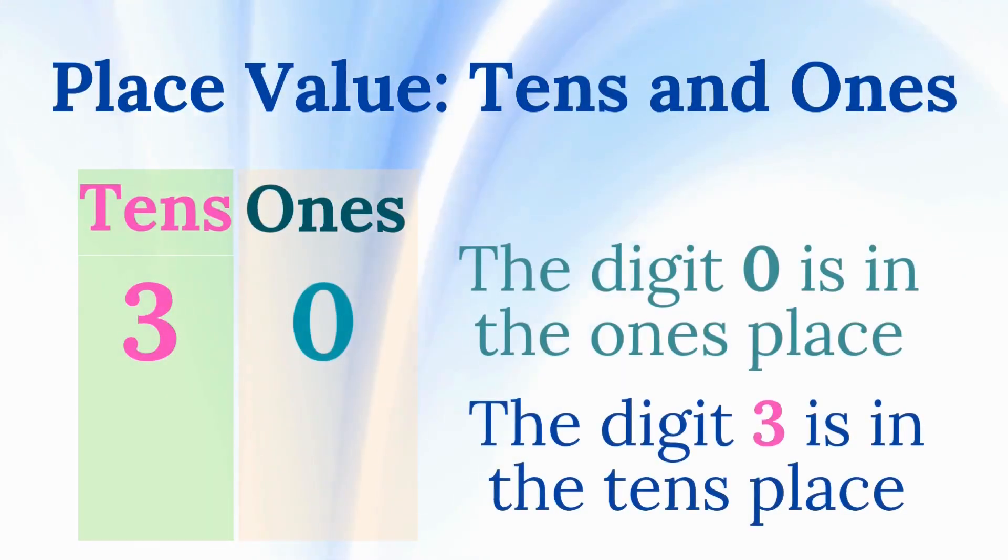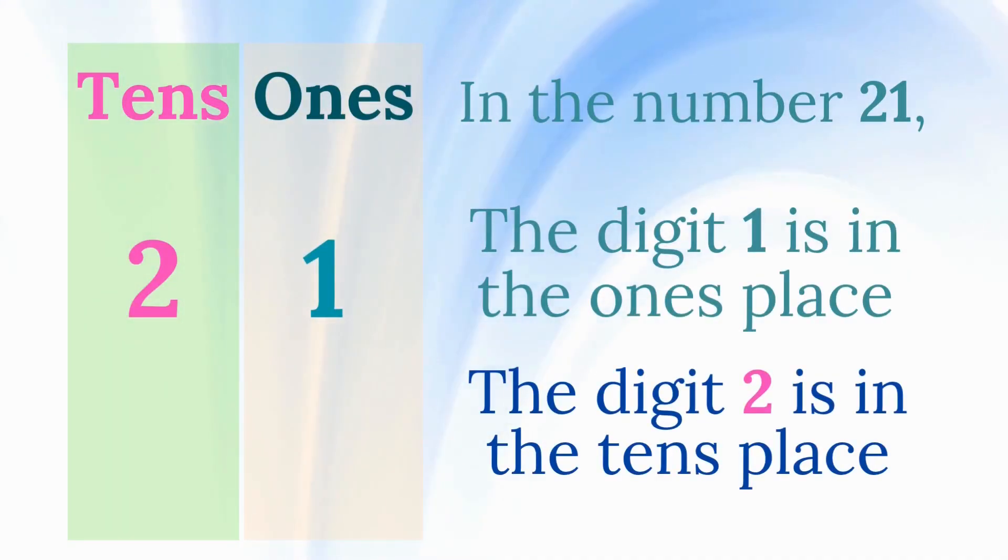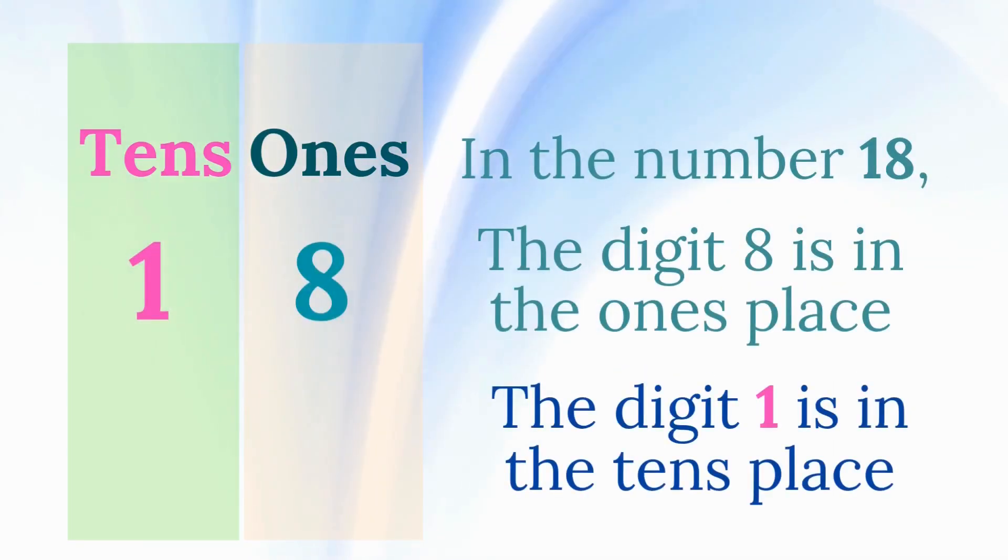Place value: 10s and 1s. In the number 30, the digit 0 is in the 1s place, and the digit 3 is in the 10s place. In the number 21, the digit 1 is in the 1s place, and the digit 2 is in the 10s place. In the number 18, the digit 8 is in the 1s place, and the digit 1 is in the 10s place.